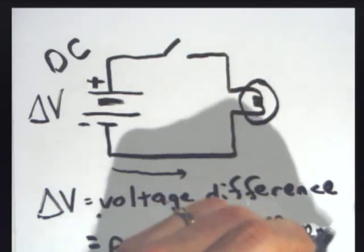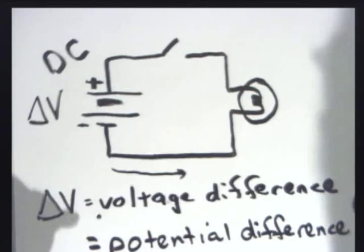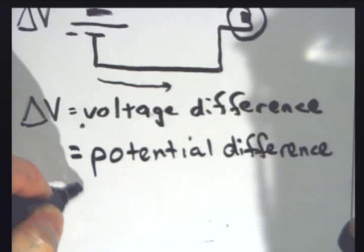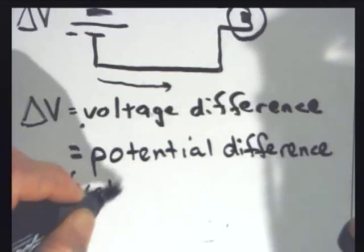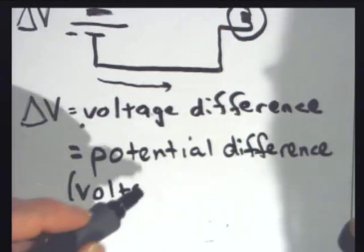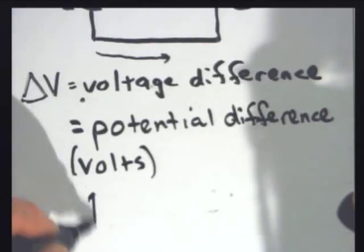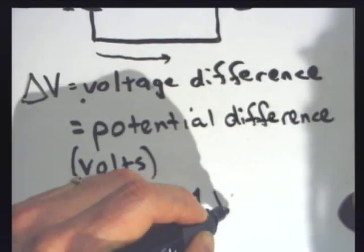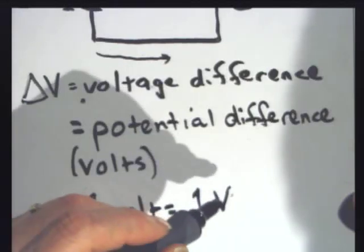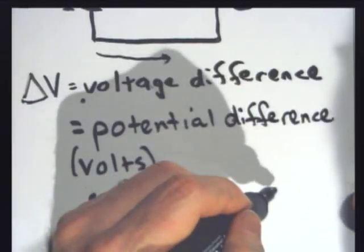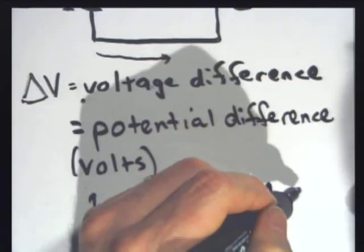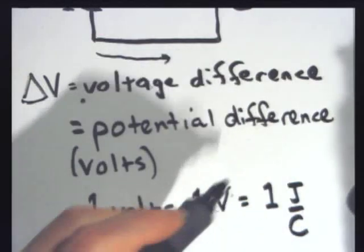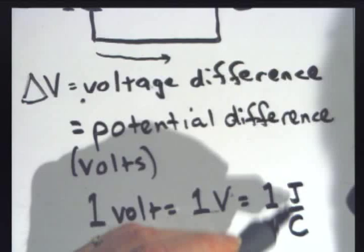Now, the units of voltage, as you may know, are volts. And one volt is given by one capital V. It's energy per charge. It's also known as joules per coulomb. Joules are units of energy, and coulombs are units of charge. So a volt is the amount of energy you give to each charge.